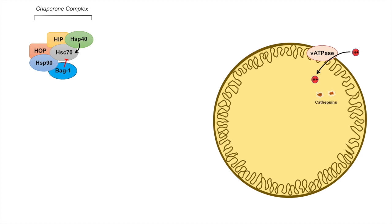Inside the lysosome there are particular proteases known as cathepsins, which break down protein cargo from macroautophagy or chaperone mediated autophagy. We require adequate amounts and adequate function of cathepsins for CMA to occur. There is also an important protein at the lysosomal membrane: LAMP1, or lysosome associated membrane protein 1, which is involved in lysosomal stability and lysosomal binding.